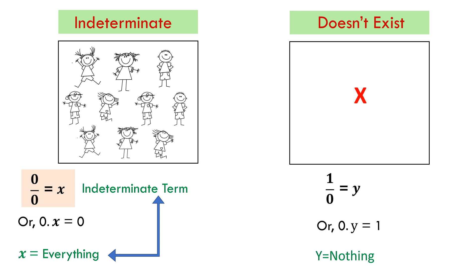Therefore, y equals to 1 by 0 doesn't exist. So, the difference between nothing and everything can be as small as 0 and 1 and yet can make a world of difference.